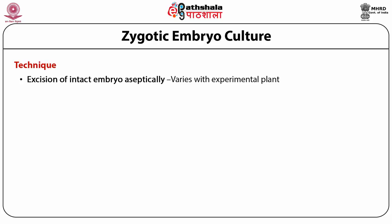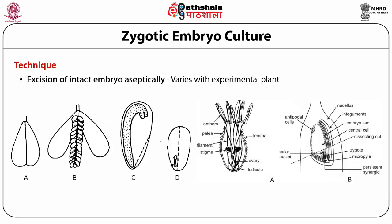The basic technique of embryo culture involves aseptic excision of the intact embryo. The technique may vary with the experimental plant and the stage of embryo at which it is excised. In Capsella bursa-pastoris, the embryo is located laterally in the seed, so in a mature seed, a lateral incision and gentle squeezing will release the embryo.